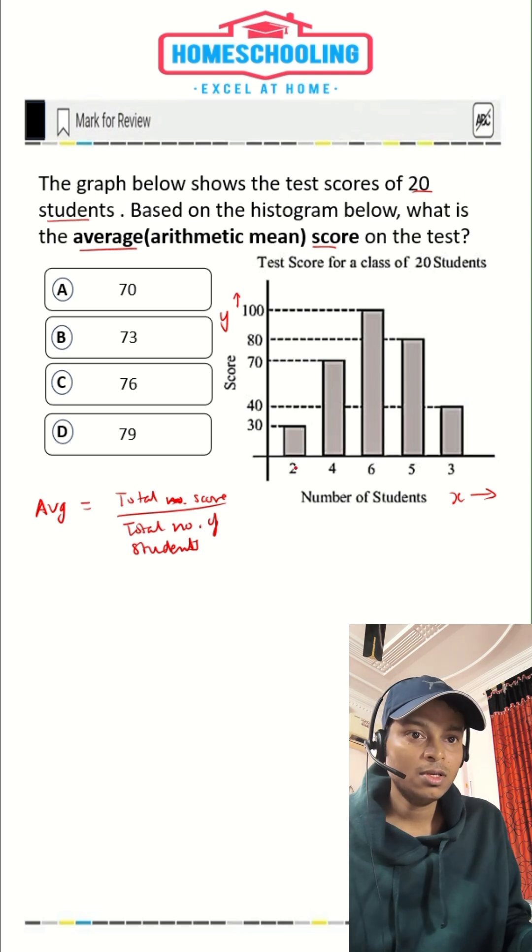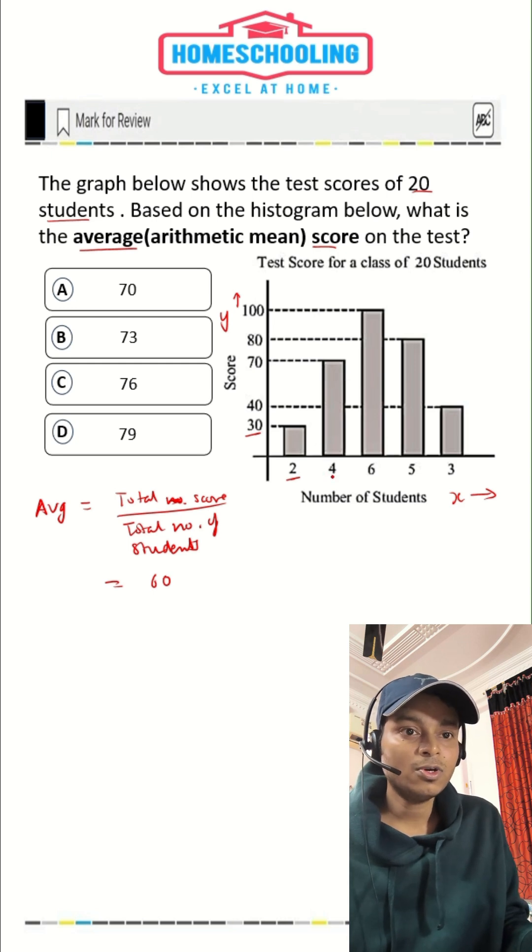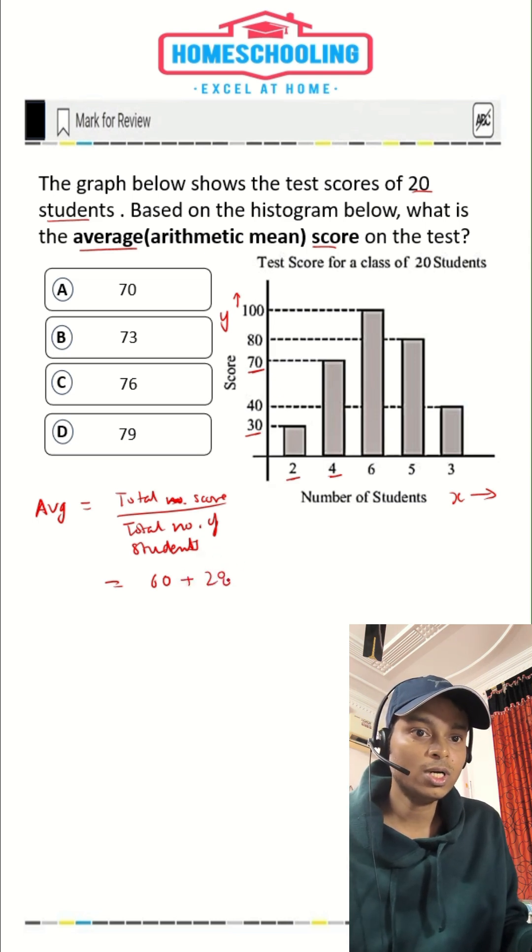As we can see, the number of students is two. So for two students, their score was 30. So the cumulative score of those two students would be 30 plus 30, that is twice of 30, that would be 60. Now for these four students, the score was 70. So their cumulative score would be 70 times 4, that is 280.